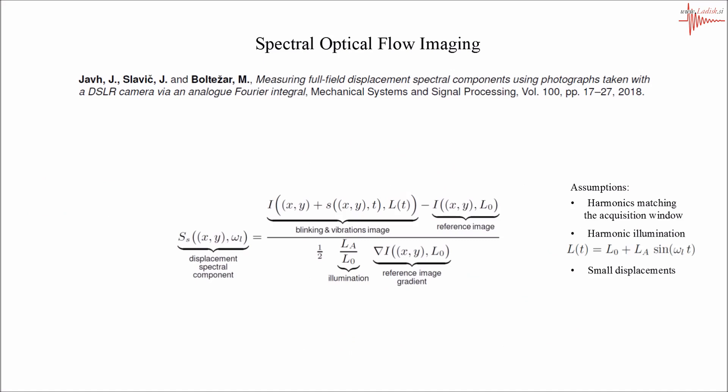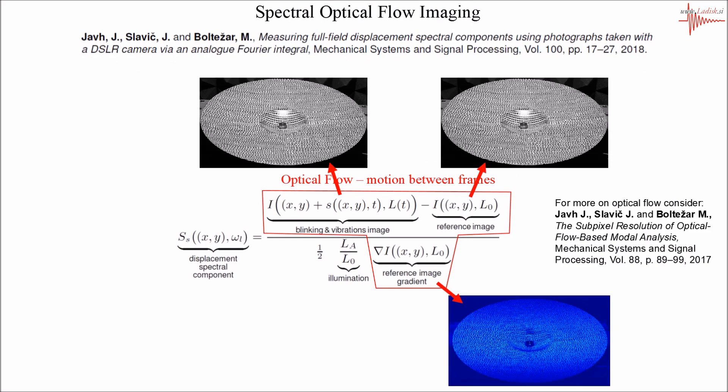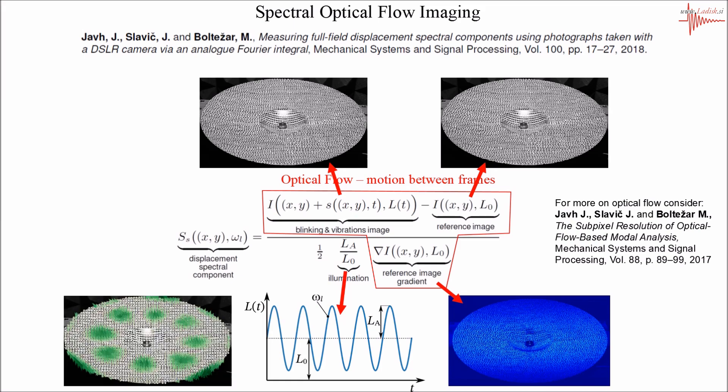The following relation is produced from the derivation. This part represents the optical flow or motion between frames. In our case, this is the motion between the reference image and the image produced for the harmonically varying illumination and the vibrating structure, during which the structure vibrates. By scaling this with the illumination, full-field displacement spectral components can be produced for frequency and phase set by the illumination.